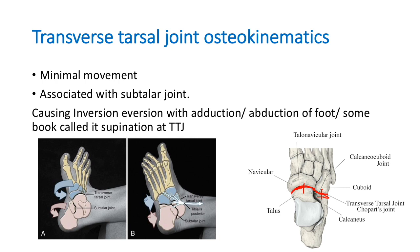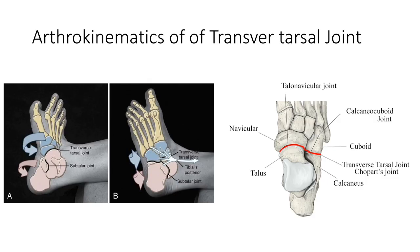During eversion, the calcaneum and navicular bone move laterally; during inversion, they move medially. Regarding arthrokinematics of the transverse tarsal joint, the navicular bone slightly spins on the head of the talus and slides laterally during eversion, and spins on the head of the talus and slides medially during inversion.